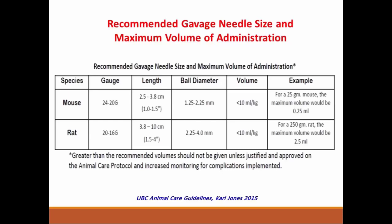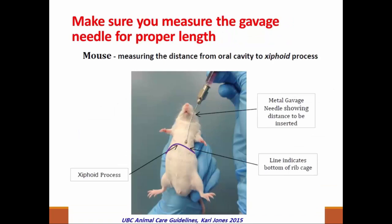In both mouse and rat, the maximum volume should be less than 10 ml per kg. The length of the gavage needle in mice is about 2.5 to 3.8 cm, while in rats it ranges from 3.8 up to 10 cm. Before starting administration by gavage needle, you should measure the gavage needle for proper length by measuring the distance from the oral cavity to the xiphoid process — this line indicates the bottom of the rib cage and the xiphoid process. Measure the needle to ensure that the substance will enter the stomach.